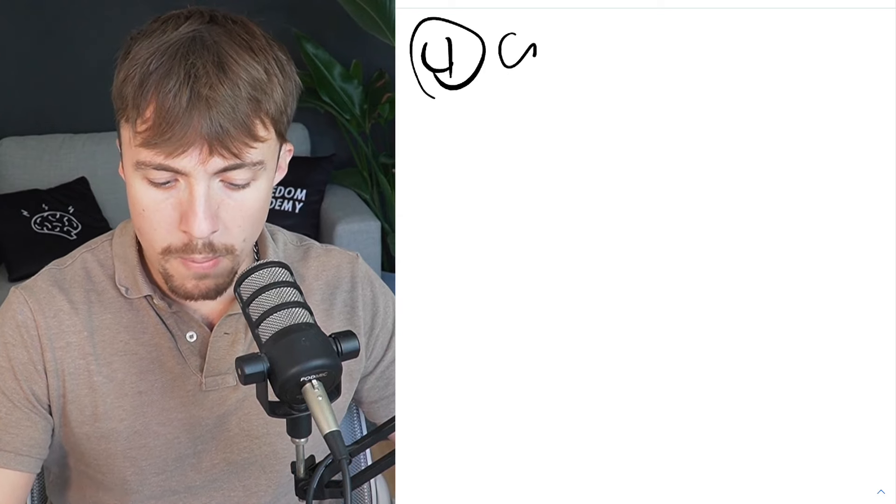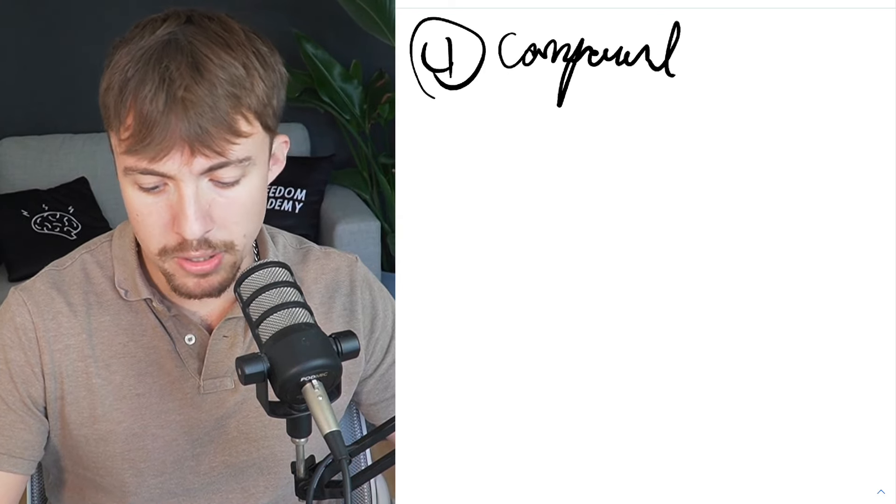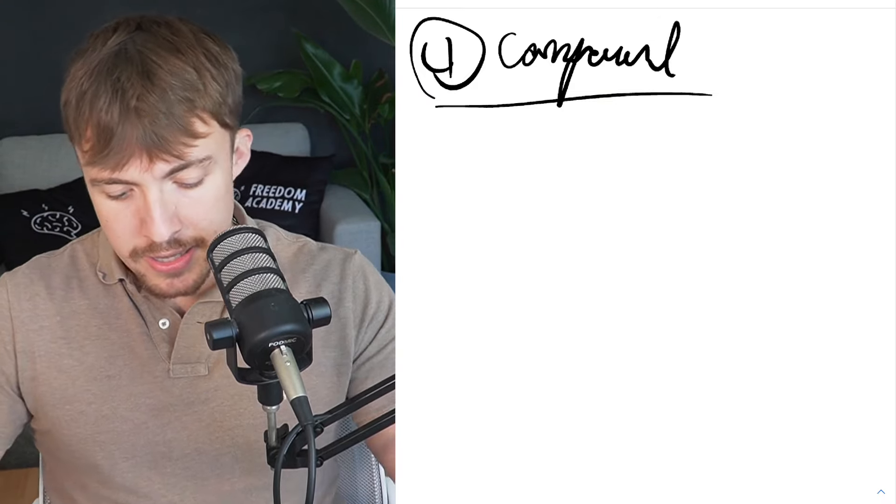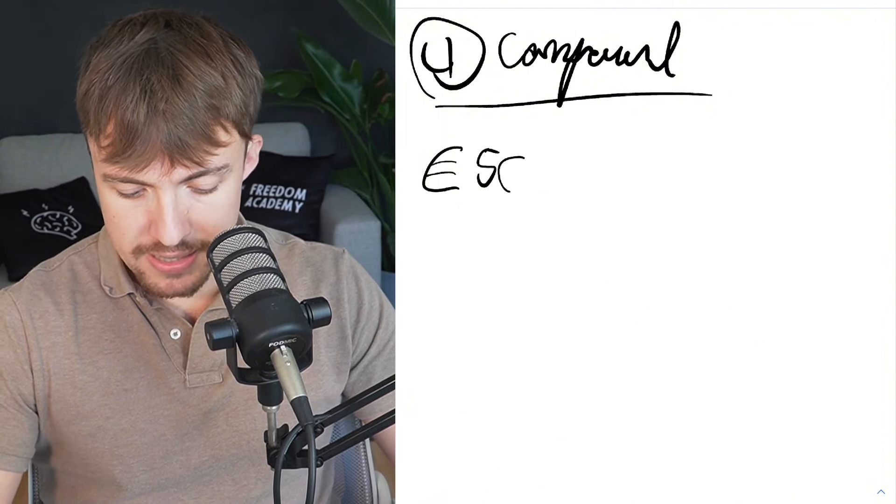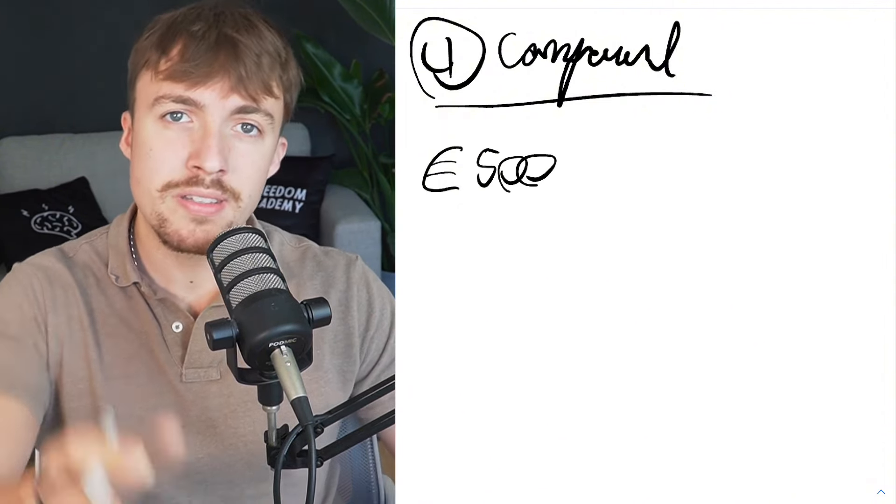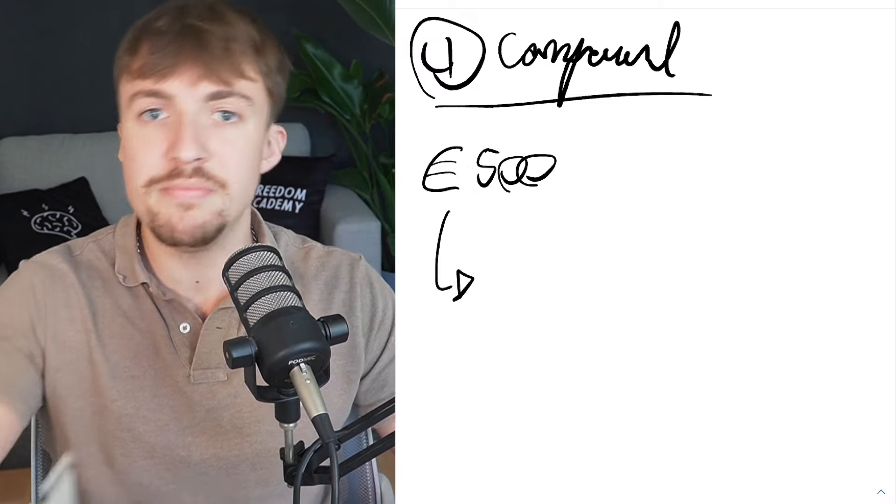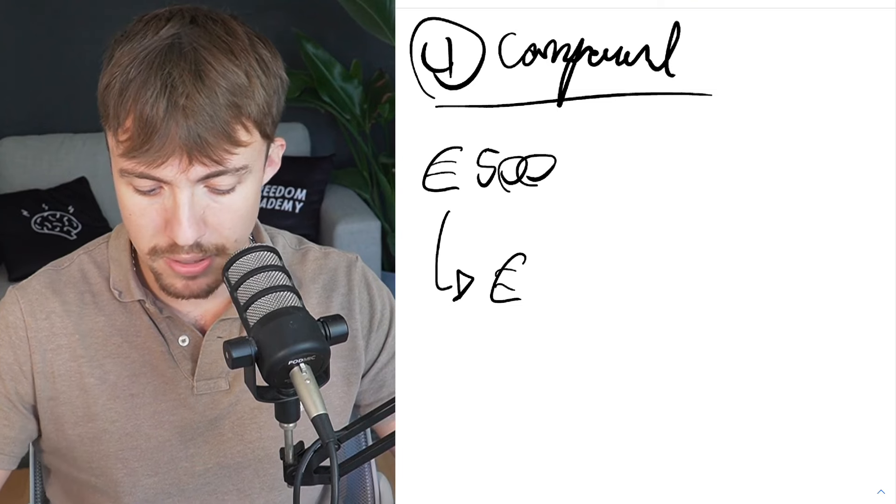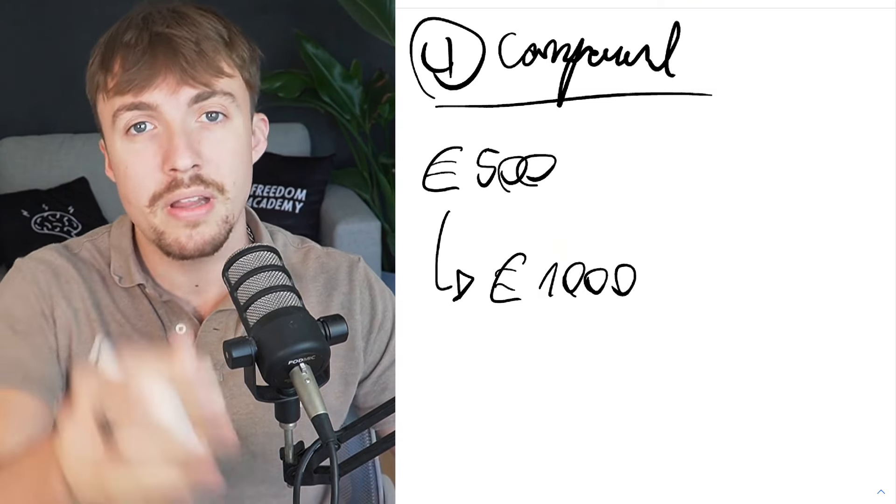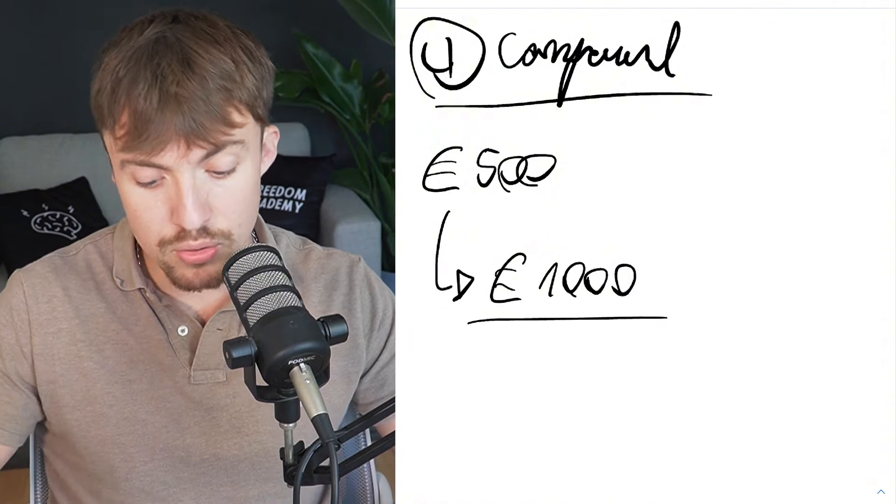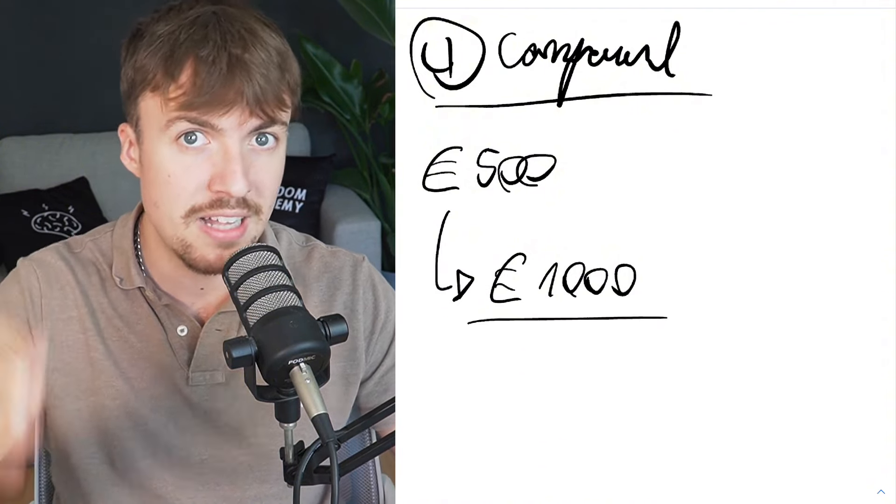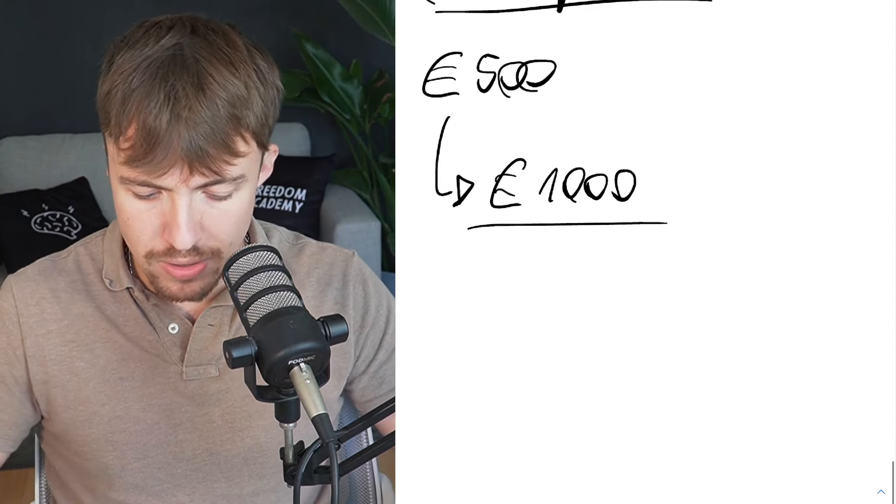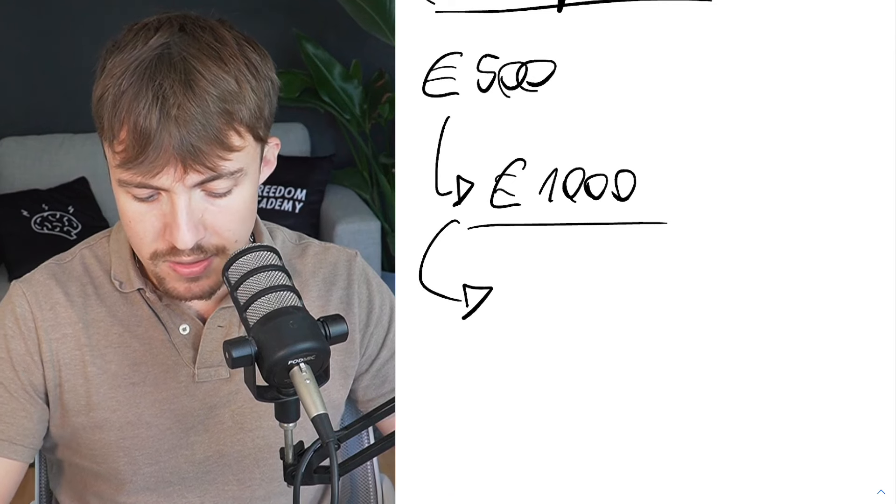At last, this is something I love to do as well which is called compounding. Compound, what that is is imagine you invest like for example like Sandra, you invest the 500 euros. In his first month that 500 euros, if you don't believe me go watch the video with him, 500 euro to a thousand in his first month, thousand net profit by the way, so 1500 grand total, took that all the way to 20,000.